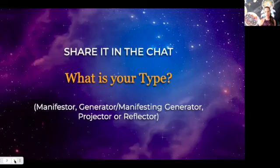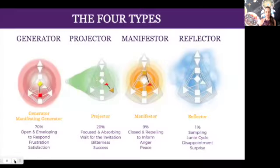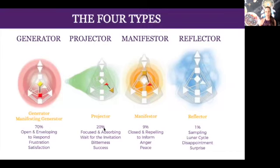The manifesting generator and generator share the same type of aura — an enveloping aura — and make up about 70% of the population. Projectors are 20%, with a focused and absorbing aura, waiting for the invitation. Bitterness is the not-self theme, success is the signature. Manifesters are 9% and reflectors are 1%.